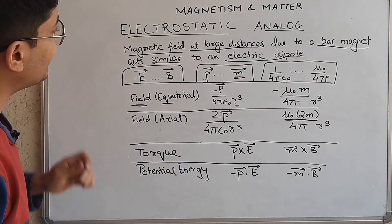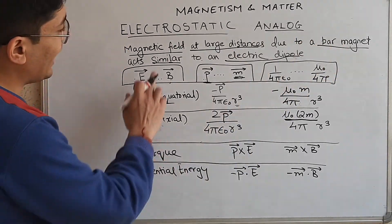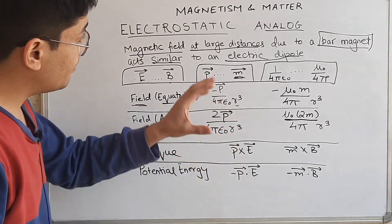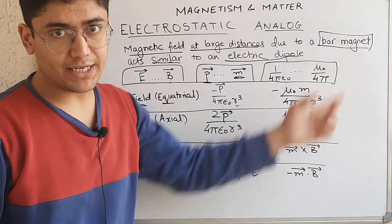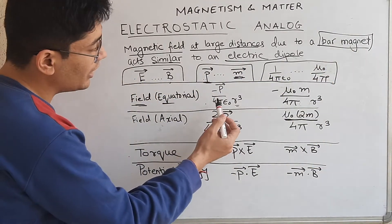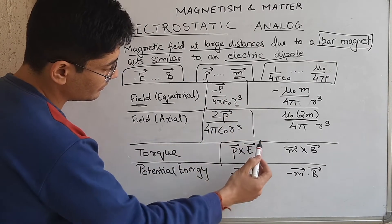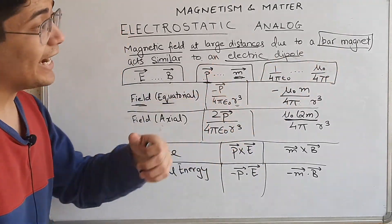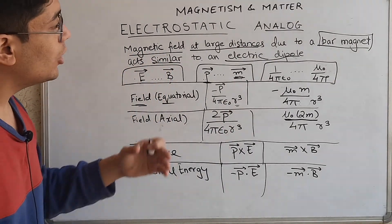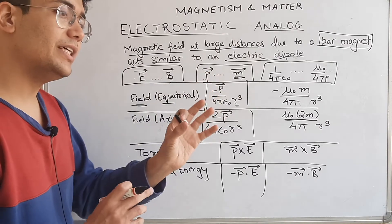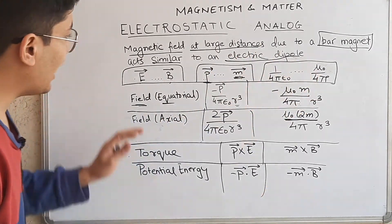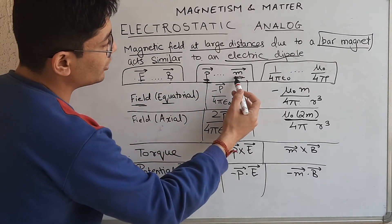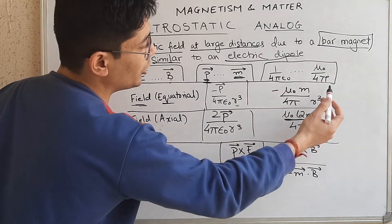The statement here is: the magnetic field at large distances due to a bar magnet acts similar to an electric dipole. The bar magnet has a north and south pole, so it is a magnetic dipole. Because of this magnetic dipole, the magnetic field at large distances has a formula quite similar to the electric field formula at large distances, using the same replacements.